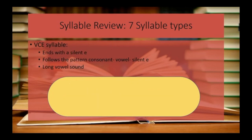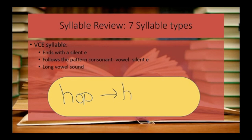Our next syllable type is the VCE syllable. The VCE syllable ends with a silent E. It follows the pattern consonant, vowel, silent E, and it contains a long vowel sound. We talked about the difference between the word hop and the word hope — hope is an example of a VCE word.